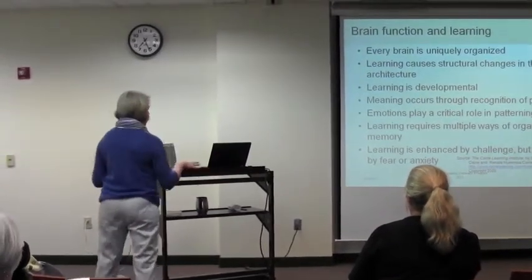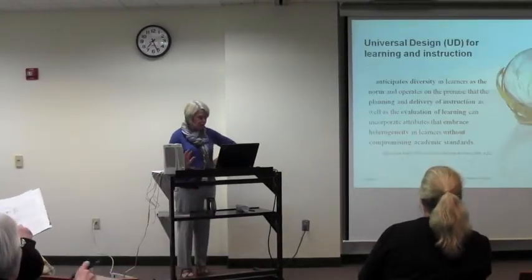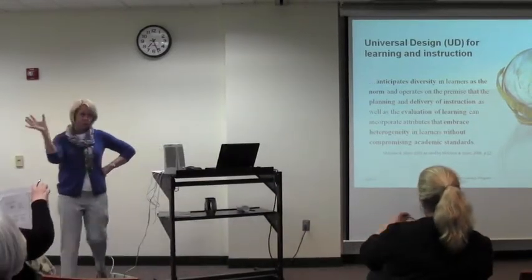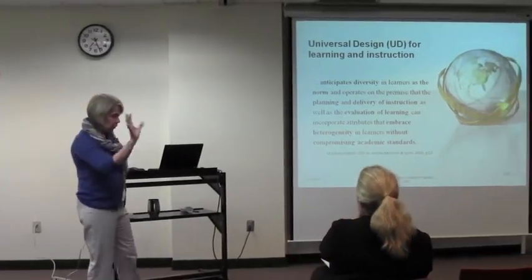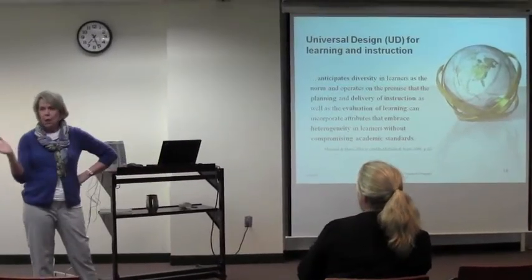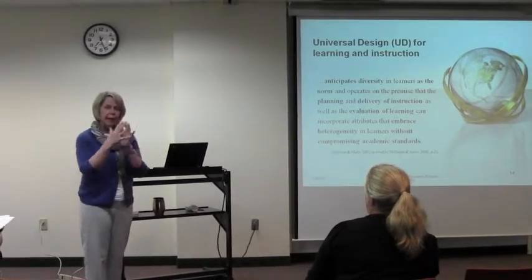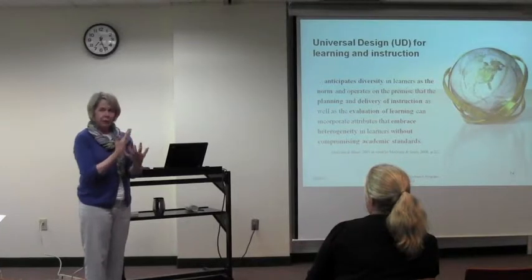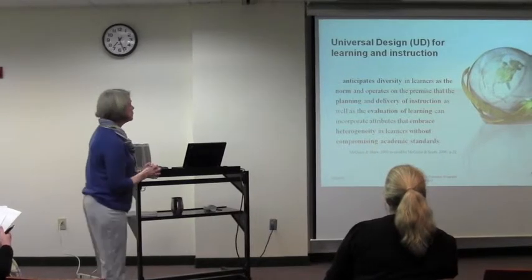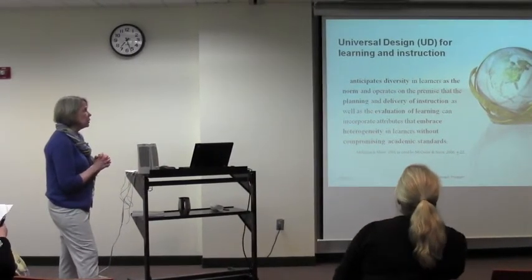We need to think about these things. So the strategic network, the affective network, and the pattern recognition network all work together as a team to make learning accessible and possible for students. That is the basis of universal design for learning and instruction.